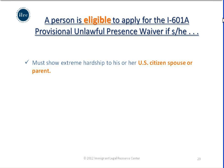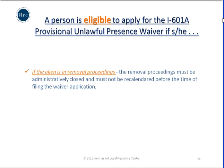The applicant must also show extreme hardship to his or her U.S. citizen spouse or parent — only a U.S. citizen spouse or parent will qualify the applicant for the waiver in regards to the extreme hardship element. If the alien is in removal proceedings, the proceedings must be administratively closed and must not be recalendared before the time of filing the waiver application.